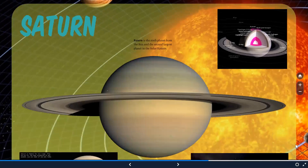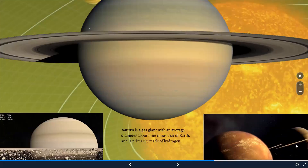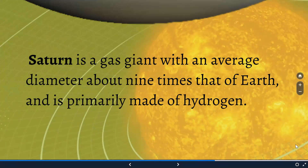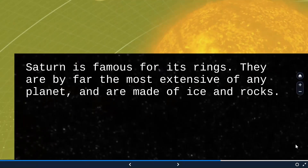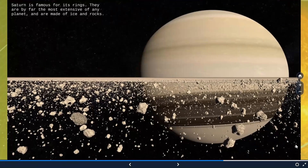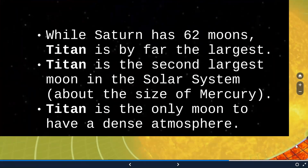The sixth planet is Saturn — a beautiful planet and the second largest in the solar system. It is also a gas giant primarily made of hydrogen. Saturn is famous for its rings, which are made up of ice and rocks. While Saturn has 62 moons, Titan is by far the largest — in fact, it is the second largest moon in the solar system and the only moon to have a dense atmosphere.